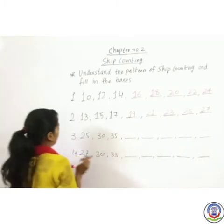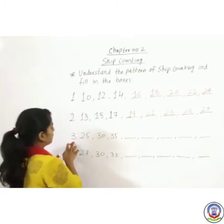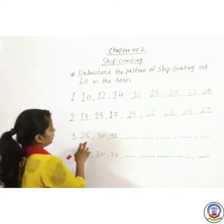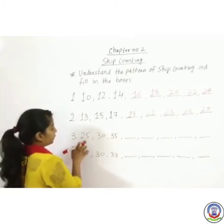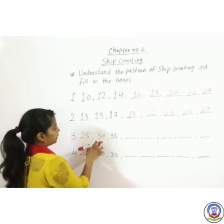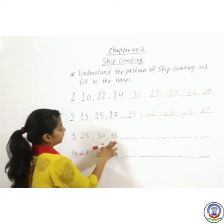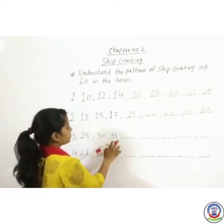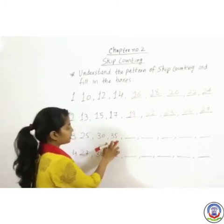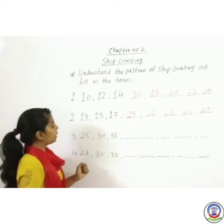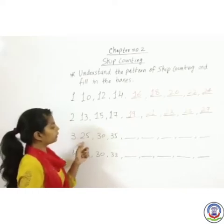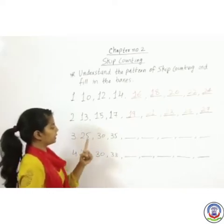Number 3 — the numbers given are 25, 30. We will see the pattern here.